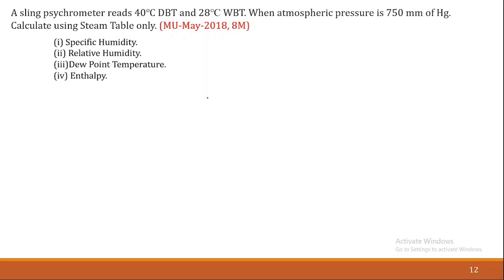Hello everyone, we will start numericals on psychrometry. This is our first numerical which was asked in Mumbai University question paper May 2018 for 8 marks. A sling psychrometer reads 40 degrees Celsius dry bulb temperature and 28 degrees Celsius wet bulb temperature. When atmospheric pressure is 750 mm of mercury, calculate using steam tables: specific humidity, relative humidity, dew point temperature, and enthalpy.